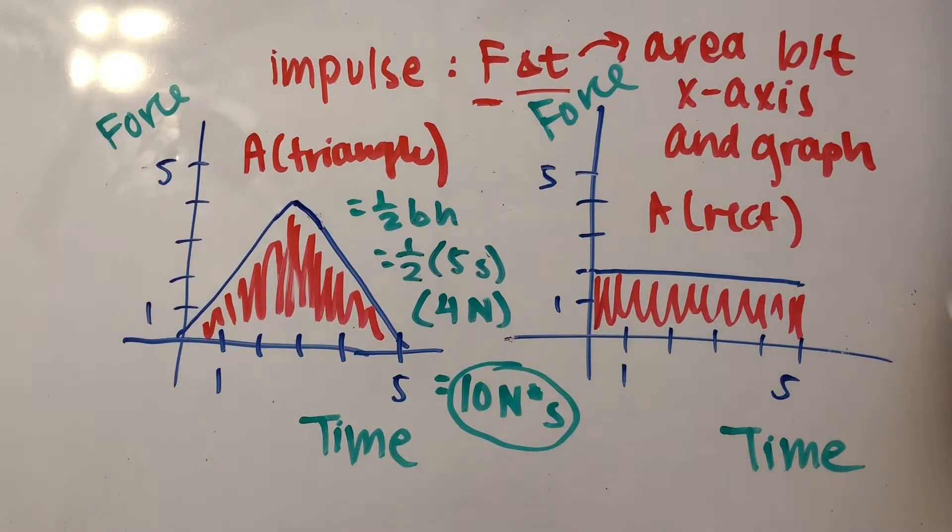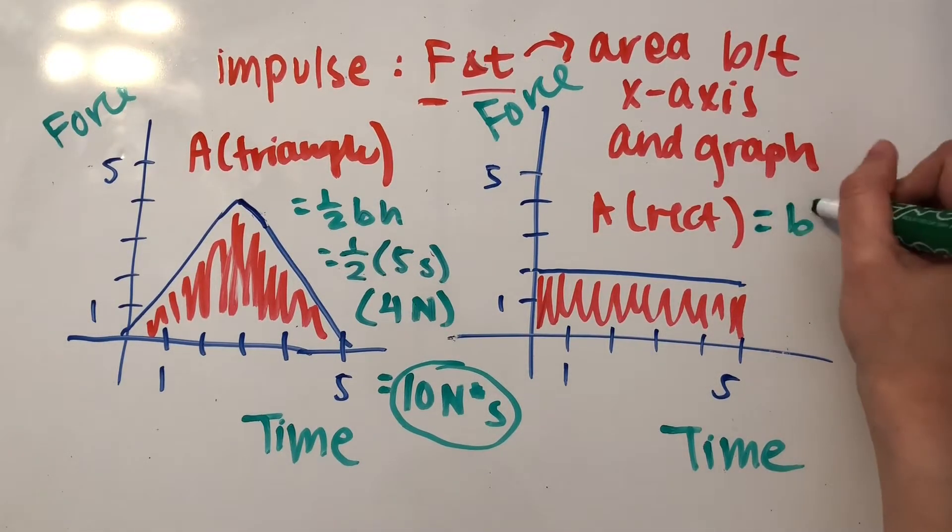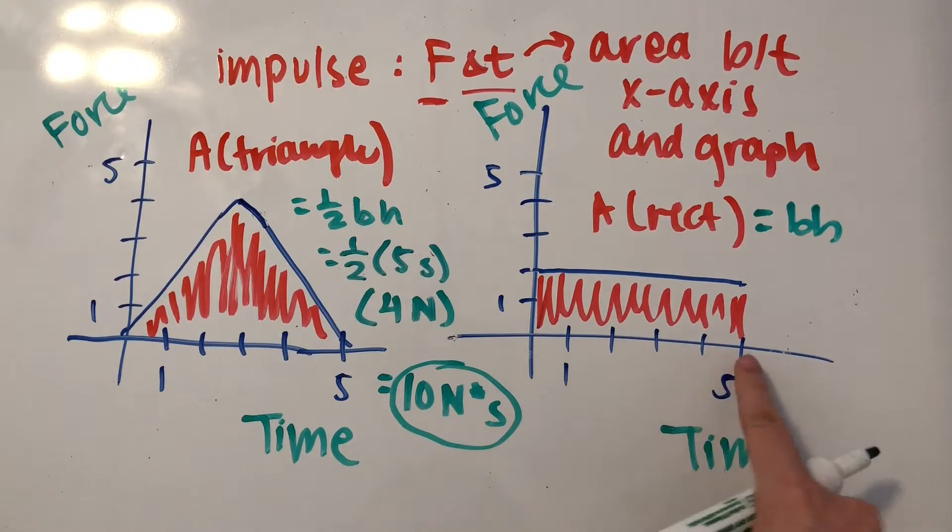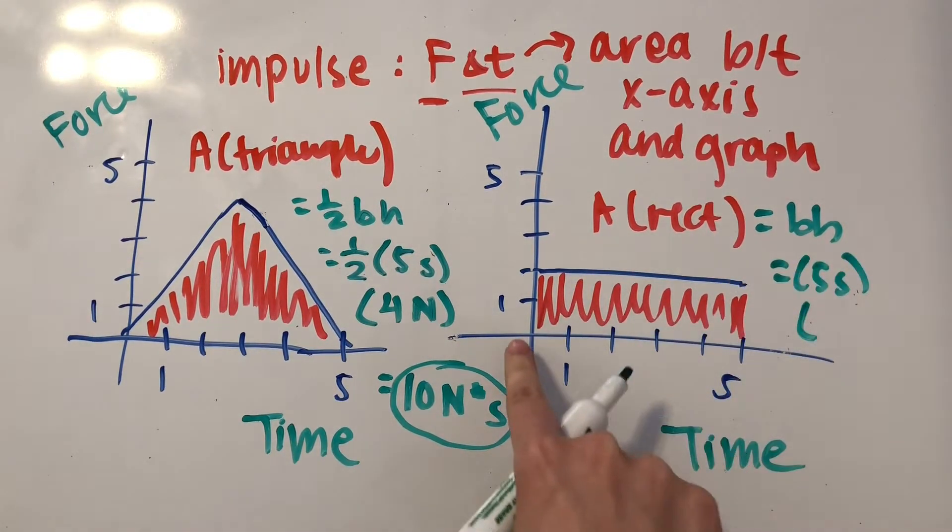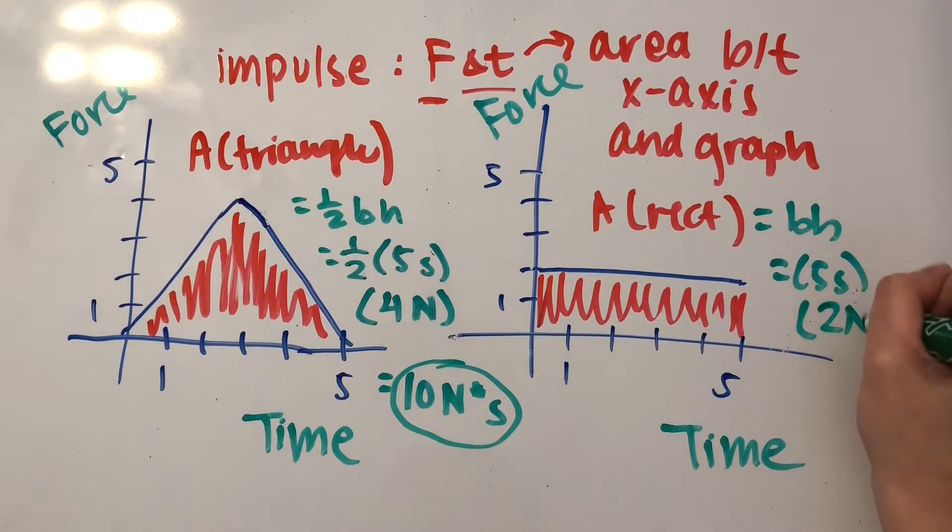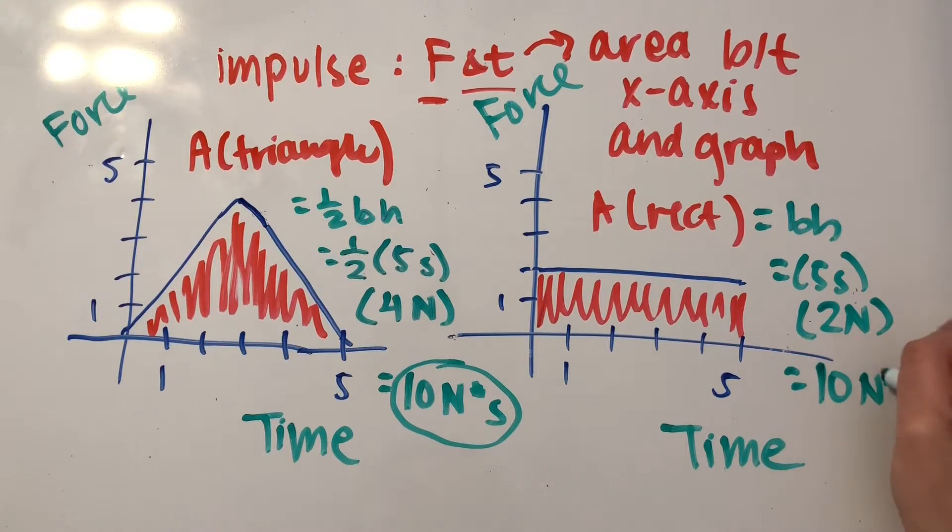Now let's take a look at the second graph. So the area of a rectangle is simply equal to base times height, which is five seconds times the height, which is two newtons. And so that's just equal to 10 newtons times seconds.